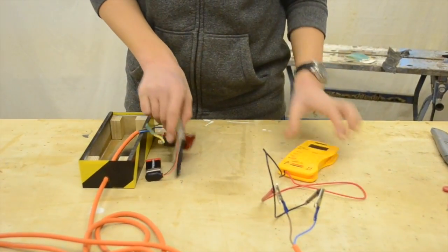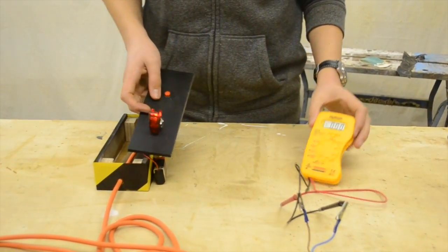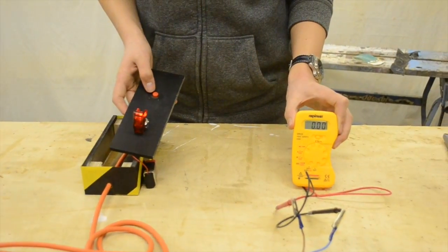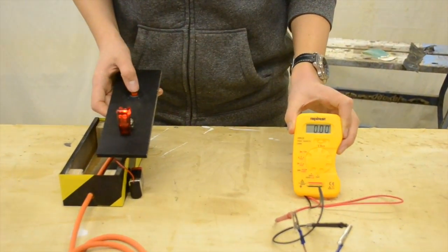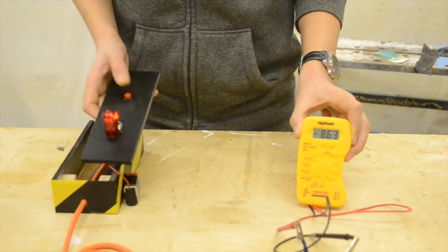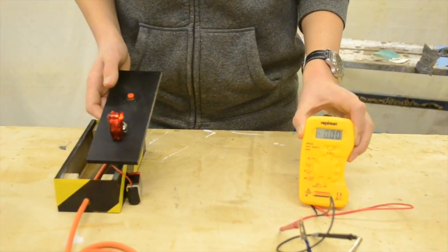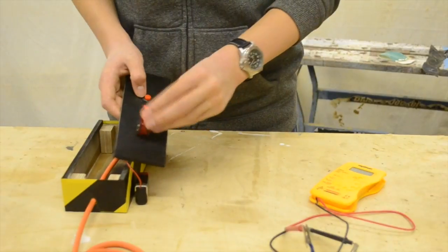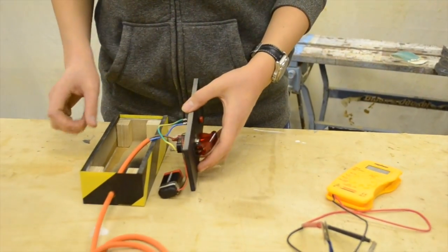And then we need to arm it with the switch there, and then if you look at the multimeter screen, when I press the fire button it goes up, and when I release it goes down. So now we're going to tape the top together, and then we're going to go and test it.